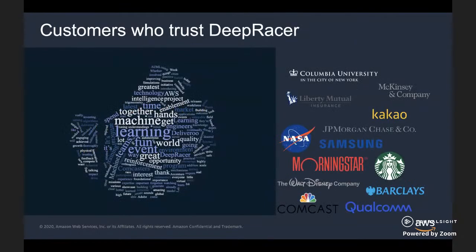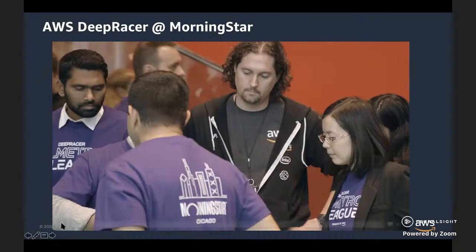We've organized hundreds of events in 2019, and we've learned that DeepRacer is a very effective tool to introduce anyone in any company to machine learning concepts and get them to practice hands-on. Customers who have trusted us include Comcast, Samsung, NASA, Starbucks, and JPMorgan Chase. On the next slide, we share a short video of Morningstar, who set up their own DeepRacer league and have been pioneering DeepRacer since the beginning, bringing together different teams from different regions.